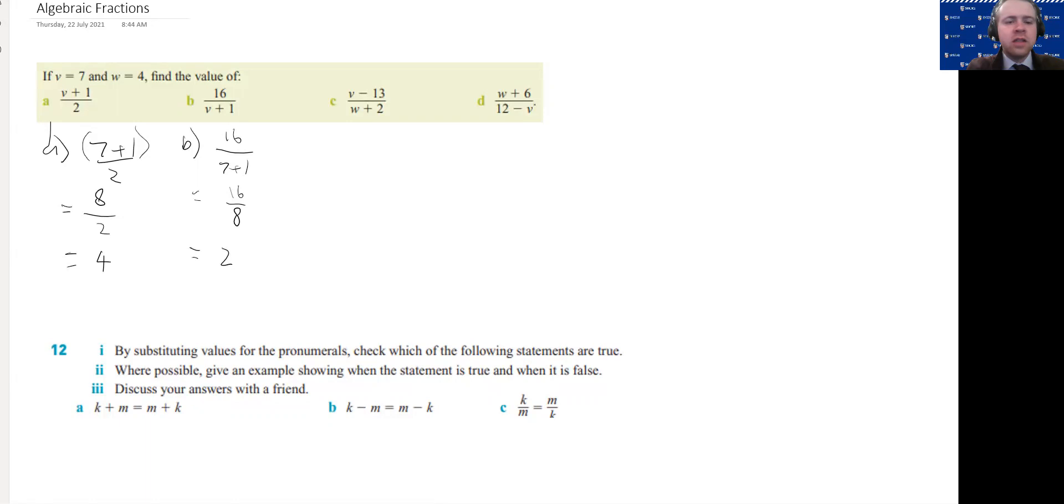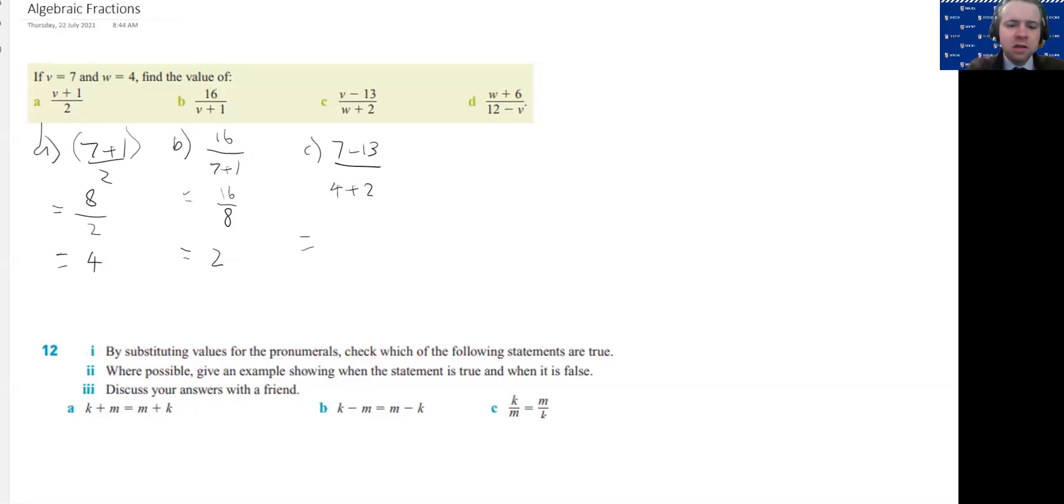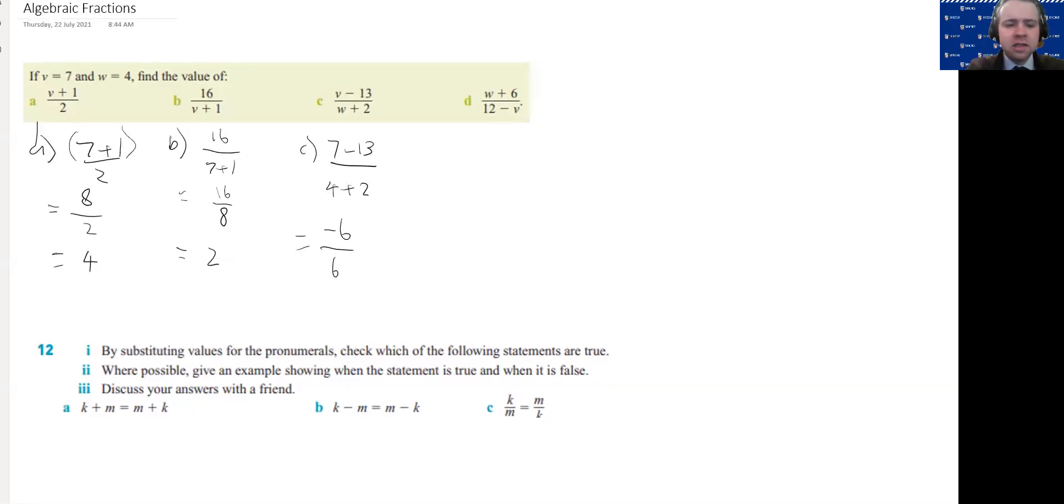For this one here v is 7 so we've got 7 minus 13 on top and w is 4, 4 plus 2 on the bottom. 7 minus 13, if we take away 7 we get to 0, we've got another 6 to go so we've got negative 6 and then 4 plus 2 is 6.